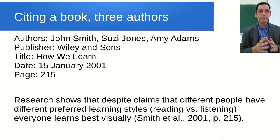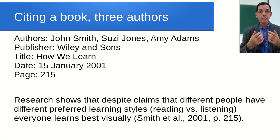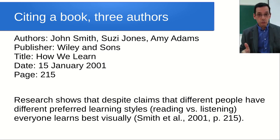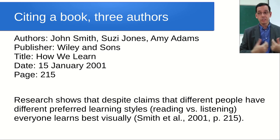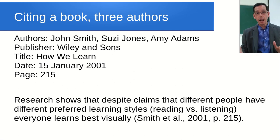If we have more than two authors, we say 'Smith et al.' 'Et al.' is Latin - it is the standard way of referring to multiple authors, and it means 'and others.' Some academic journal articles have seven or eight authors, and we don't want such a long citation that it distracts from our writing. So we just say 'Smith et al., 2001' and people can look up the details on the references page.